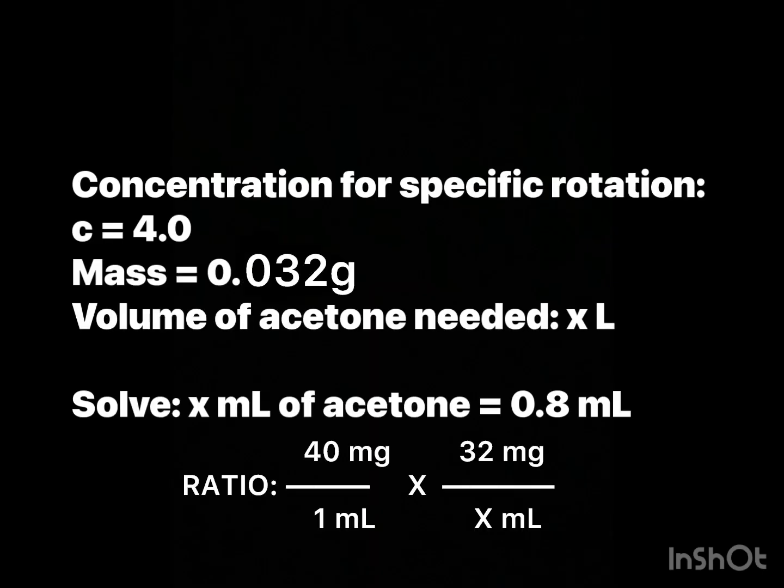To obtain a specific rotation, use a medium vial to dissolve around 40 milligrams of the solid and one mil of acetone. Since we only collected 32 milligrams, here's the math to show you that we need around 0.8 mils.